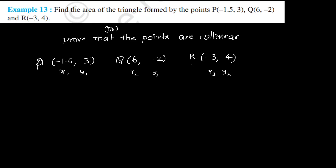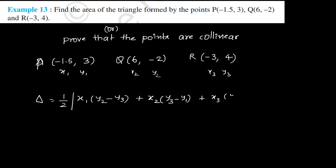If the area of the triangle is zero, then we can say that the points are collinear. So, Delta is equal to half into x1(y2 - y3) + x2(y3 - y1) + x3(y1 - y2).